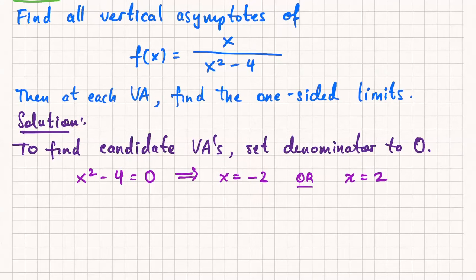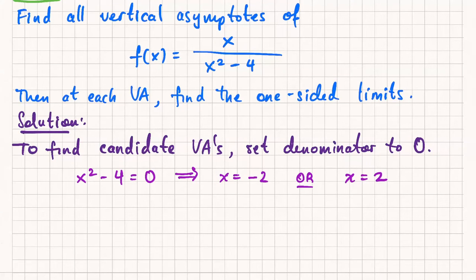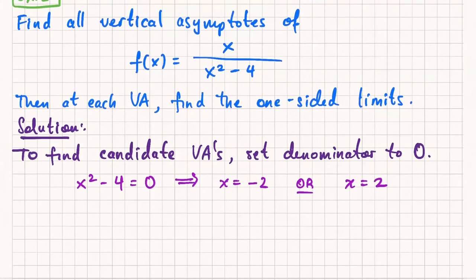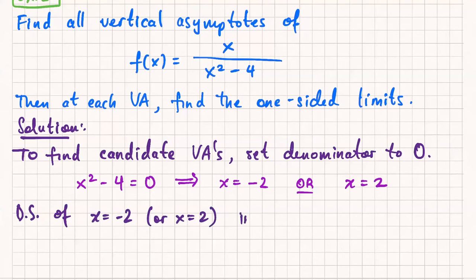How do we actually know that these give vertical asymptotes? As I just said, non-zero over zero gives you an infinite limit, which gives you a vertical asymptote. So if I plug x equals negative two and x equals two back into the original function and get non-zero over zero, that's good. Direct substitution of x equals negative two or x equals two into f of x gives non-zero over zero.